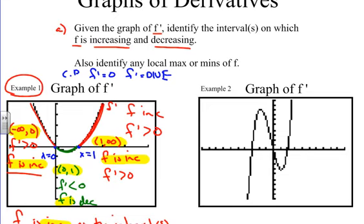So now you can correlate what we did previously when we did graph analysis. When we're given derivative graphs, we're doing the same thing but using the converse of that statement.